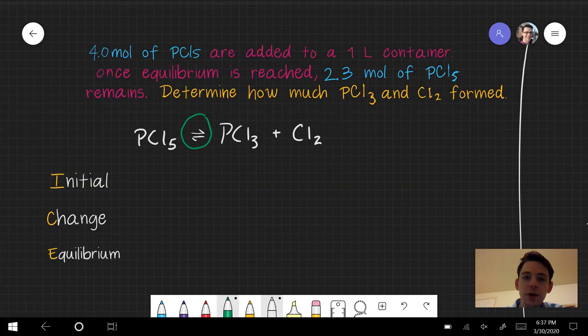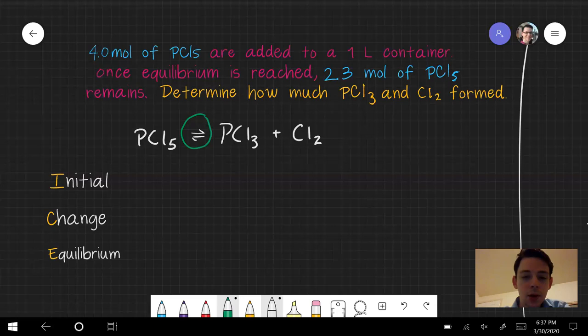First problem here says that four moles of PCl5 are added to a one liter container. Once equilibrium is reached, 2.3 moles of PCl5 remain. Determine how much PCl3 and Cl2 are formed. This is like a typical stoichiometry problem. The only difference is, being an equilibrium reaction, we don't consume all of the reactant. We only consume some amount of it before equilibrium is eventually reached.